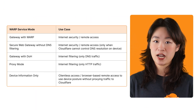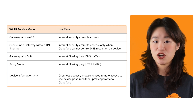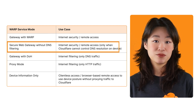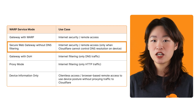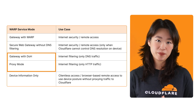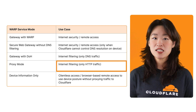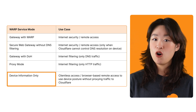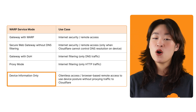It's important to know that the Warp client can operate in different modes because each mode controls the types of traffic sent to Cloudflare Gateway differently. The Warp mode determines which Zero Trust features are available on the device. Selecting the right mode depends on your organization's needs. For internet security or remote access, gateway with Warp or secure web gateway without DNS filtering would be ideal, and the latter should only be used in cases where Cloudflare cannot control DNS resolution on the device. Both gateway with DoH and proxy mode are used for internet filtering — gateway with DoH is only DNS traffic, while proxy mode is only HTTP traffic. Lastly, device information only mode would be useful for clientless access, or browser-based remote access, to use device posture without proxying traffic to Cloudflare.